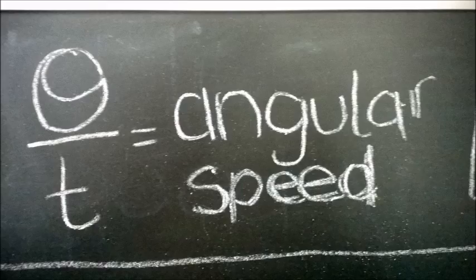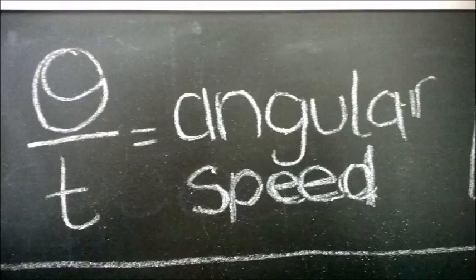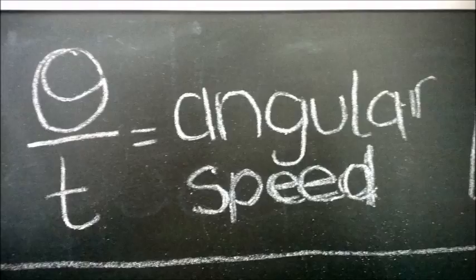Now, I have already told you that theta upon T is angular speed omega. Therefore, V theta upon T is V omega. So now we get the equation acceleration is equal to omega V.